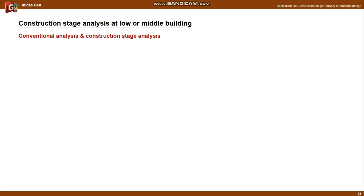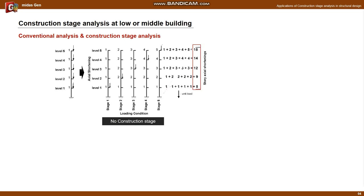Let's check the results of conventional analysis and construction stage analysis numerically. Assume that the structure has the same story height, the same load, and the same axial stiffness. First, it is a case of analysis that does not consider the construction stage. In stage 1, deformation of 1 occurs in level 1 due to the load on level 1, and deformation of 1 occurs automatically in levels 2 to 5 due to the deformation of level 1. In stage 2, due to the load acting on level 2, levels 1 and 2 have deformation values of 1 and 2 respectively. And deformation of 2 occurs automatically in levels 3 to 5 due to the deformation of level 2.